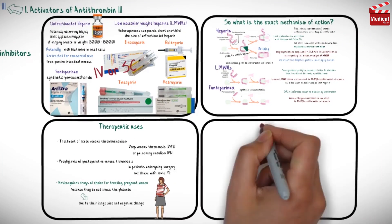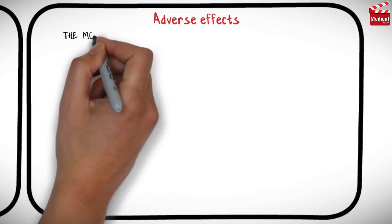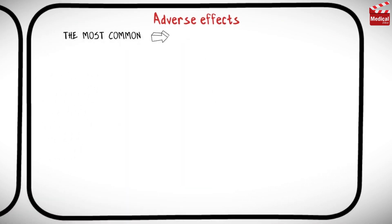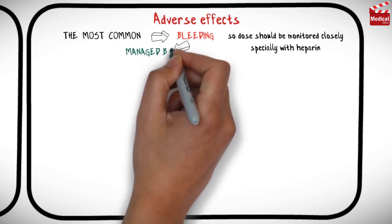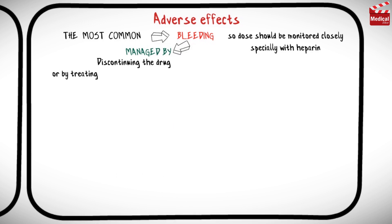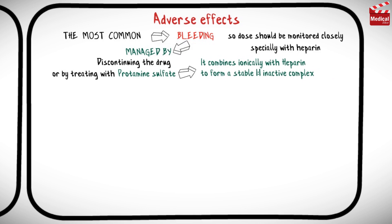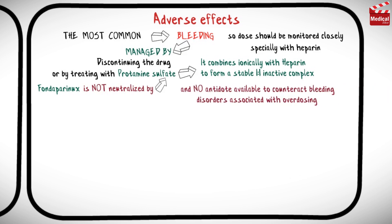The most common adverse effect of heparin and low molecular weight heparin therapy is bleeding, so the dose should be monitored closely, especially with heparin. Excessive bleeding may be managed by discontinuing the drug or by treating with protamine sulfate, which combines ionically with heparin to form a stable one-to-one inactive complex. Fondaparinux is not neutralized by protamine sulfate, and there is no antidote available to counteract bleeding disorders associated with overdosing.